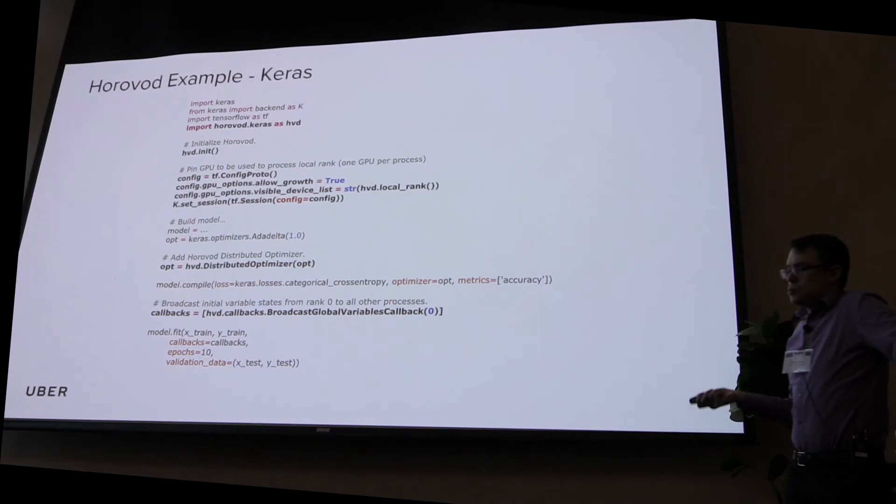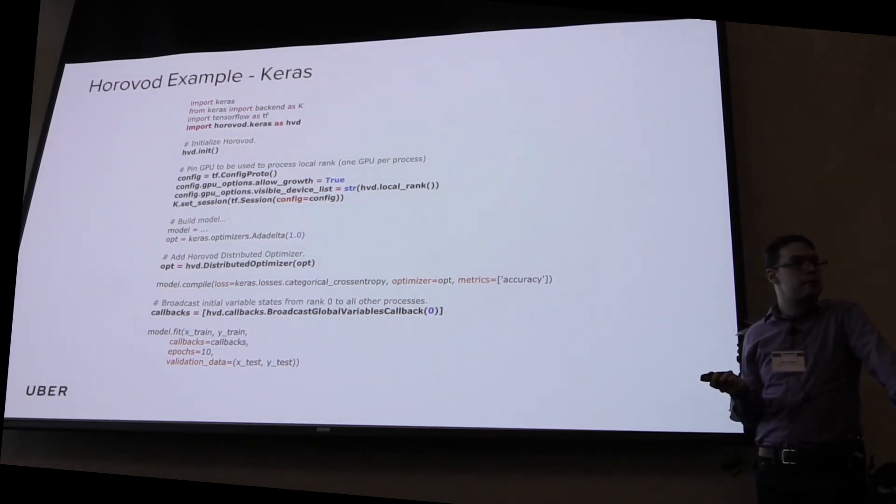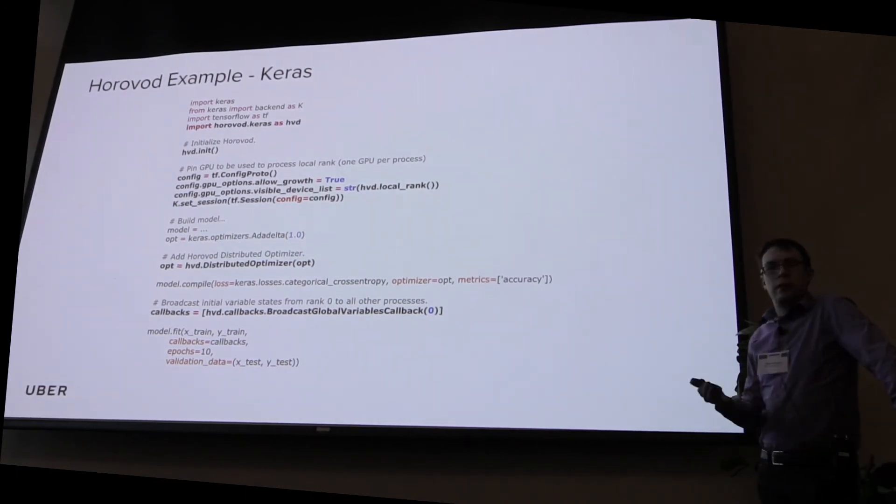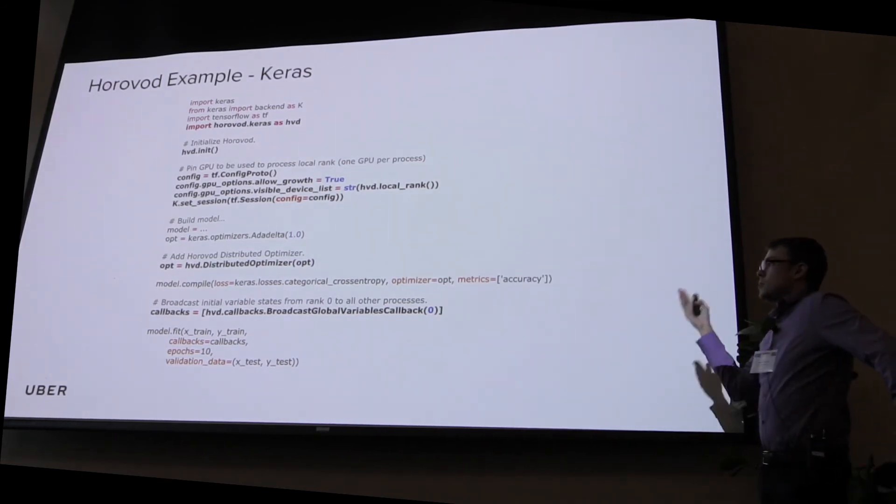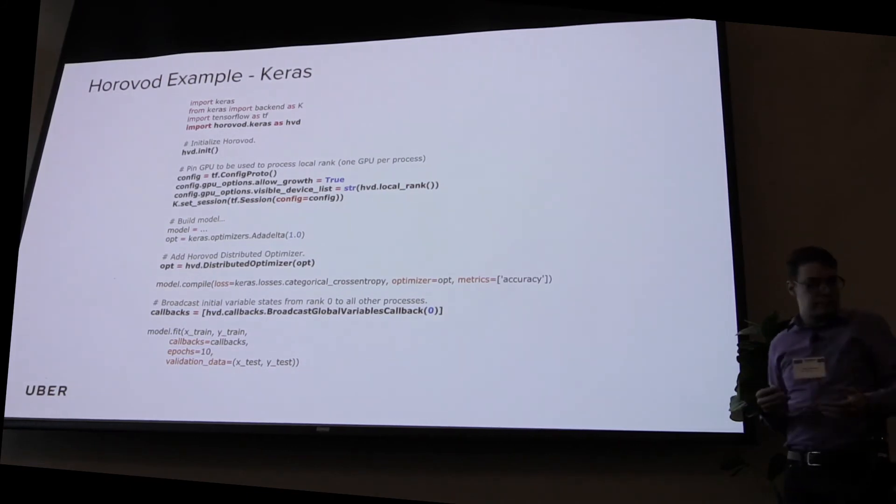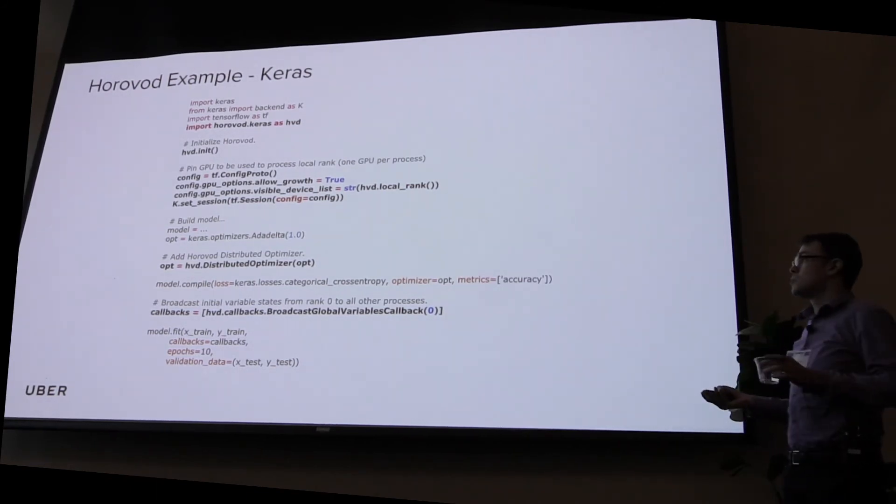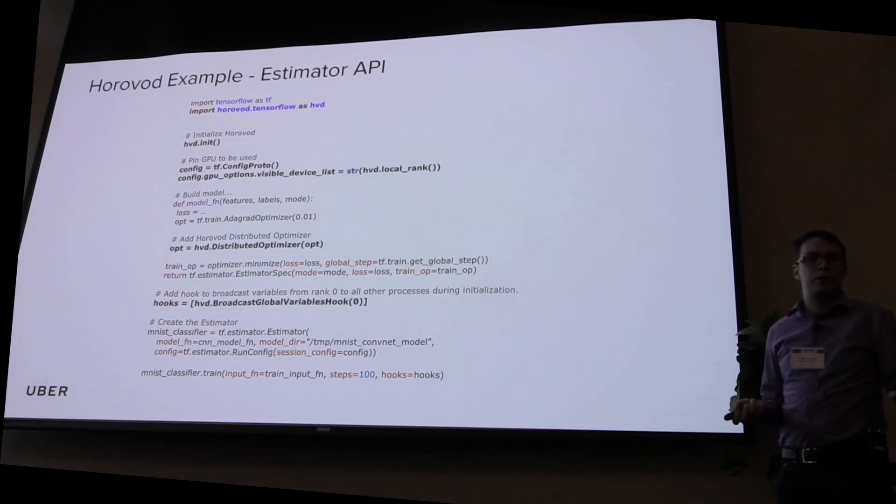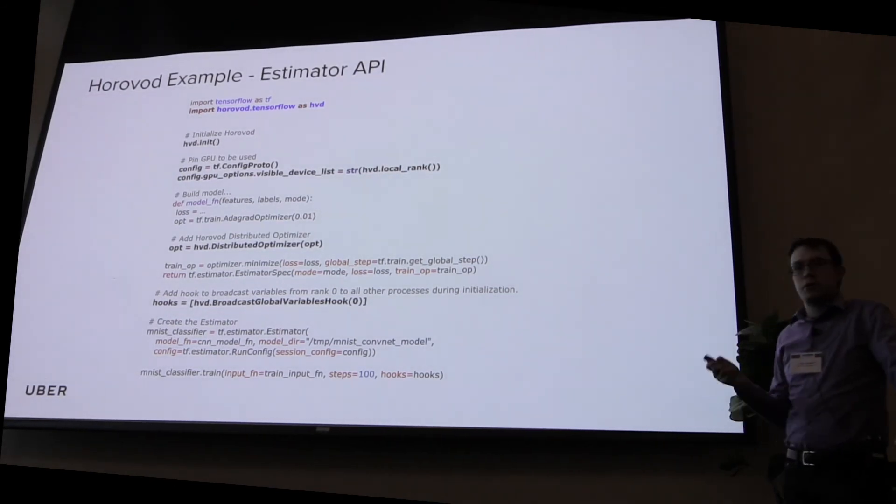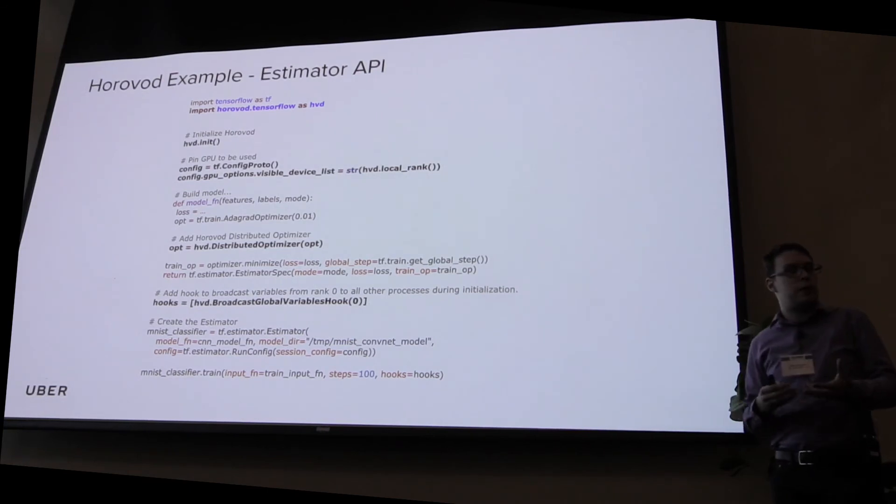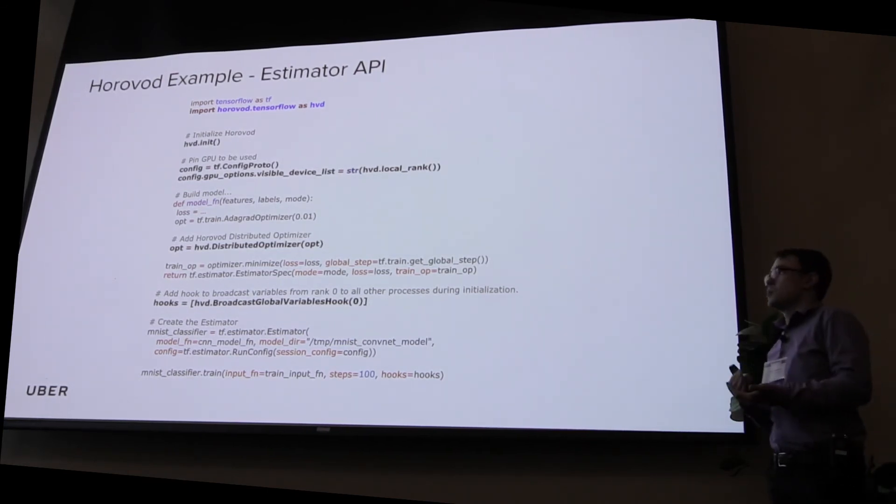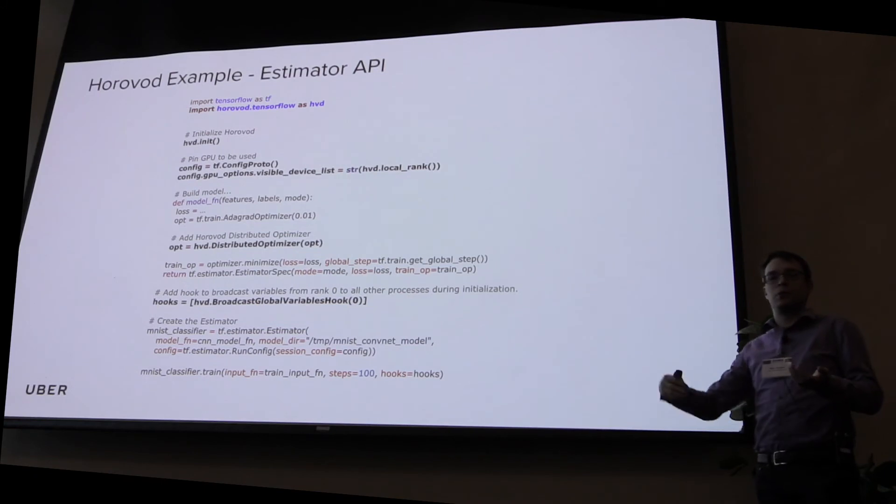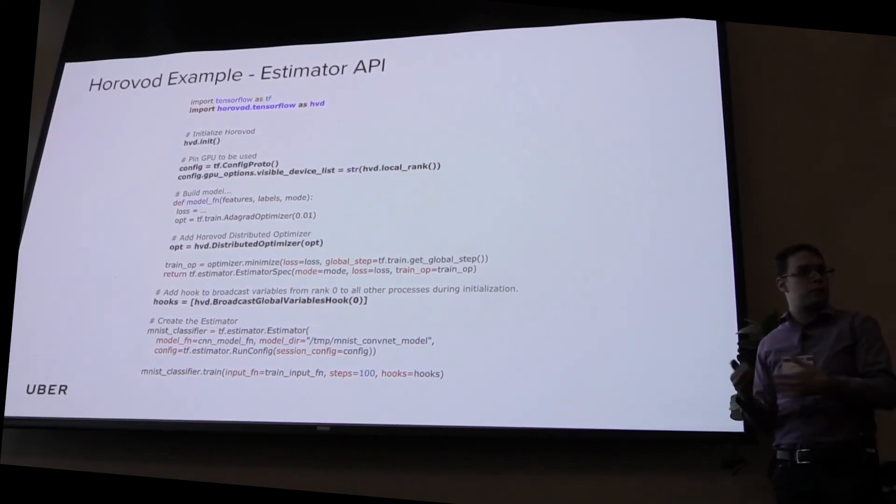And then what we also found is that a lot of researchers actually like to use high-level APIs like Keras, especially in our company. And we decided to extend the support to Keras as well. So you can see that with about the same amount of complexity and same concepts, you can add distributed training using Keras. Then recently Google released this estimator API and some people were starting to use that. So we added support for estimator API as well. And as you can see, in all three cases, concepts are all the same. APIs are very similar. So it becomes easy for people - once they know how to distribute one way of doing TensorFlow, they can grab the model from another researcher or from open source and distribute that other model equally easily.